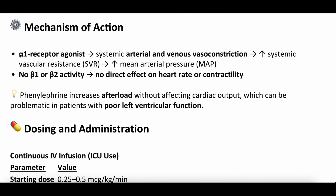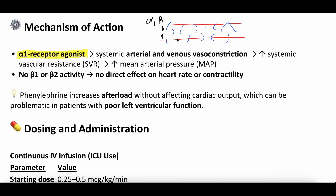Mechanism of action: this is a pure alpha-1 receptor agonist, so it only works on alpha-1 receptors. The alpha-1 receptors are in peripheral blood vessels. There's smooth muscle on all these peripheral blood vessels, and when alpha-1 receptors are stimulated, they cause vasoconstriction. In doing so, it increases systemic vascular resistance, which increases mean arterial blood pressure. It does not have any beta-1 or beta-2 activity, so there's no direct effect on heart rate or contractility. As a pure alpha-1 agonist, it does increase afterload — the resistance the heart has to pump against — without increasing contractility.